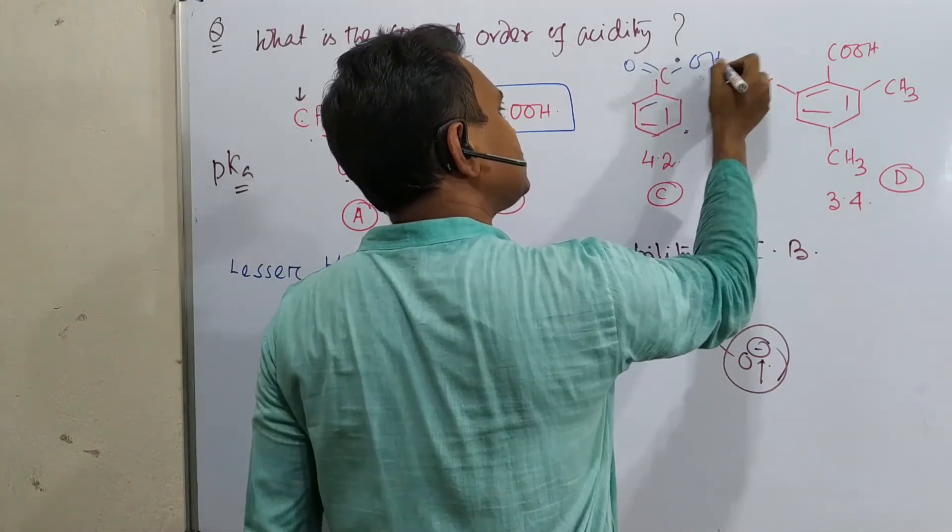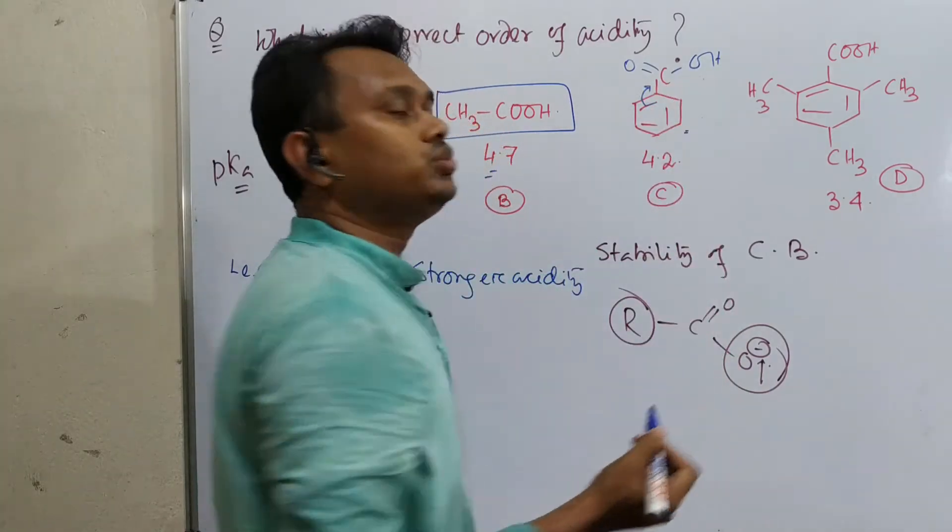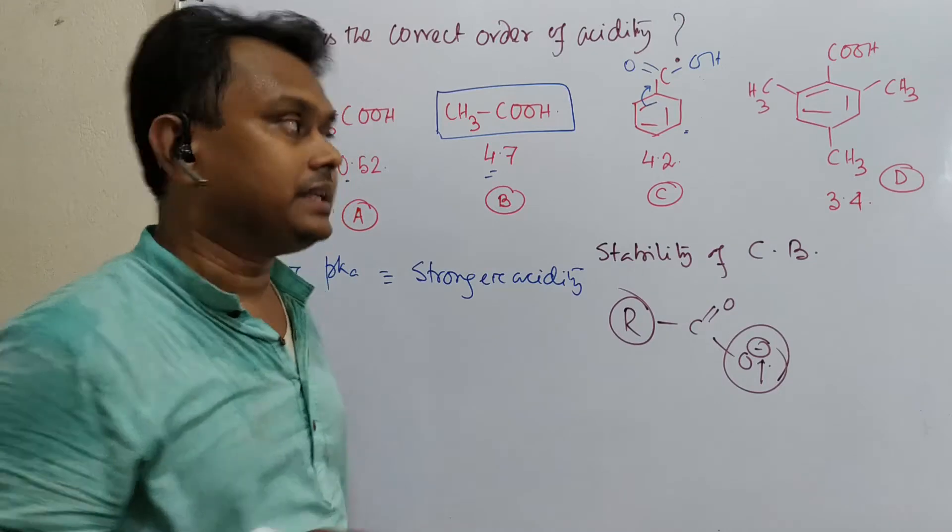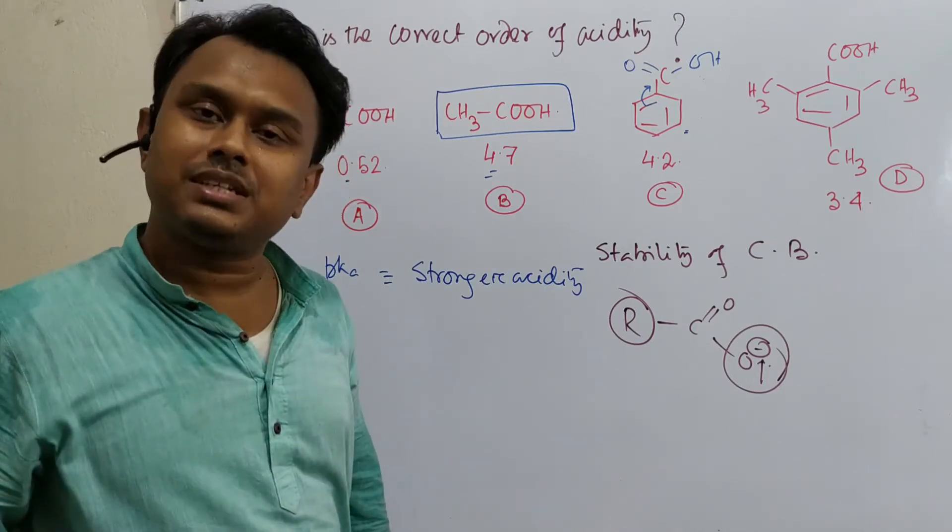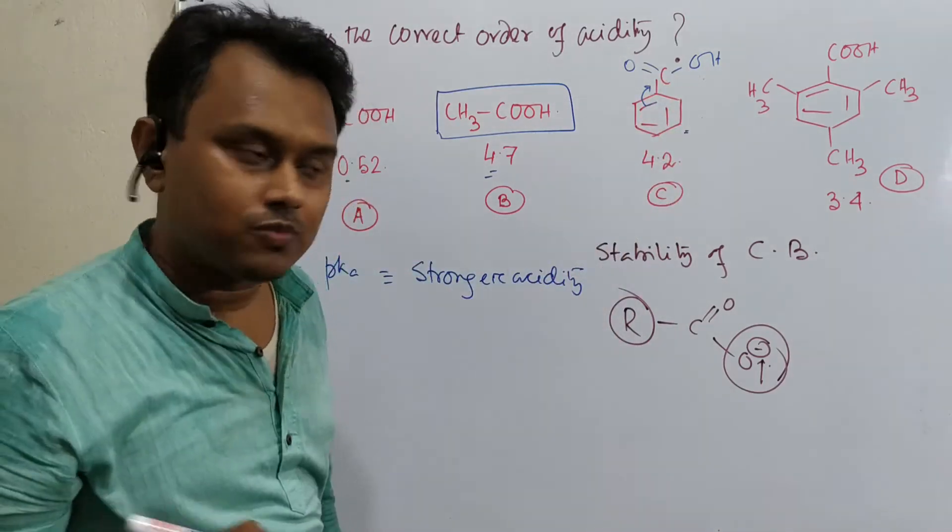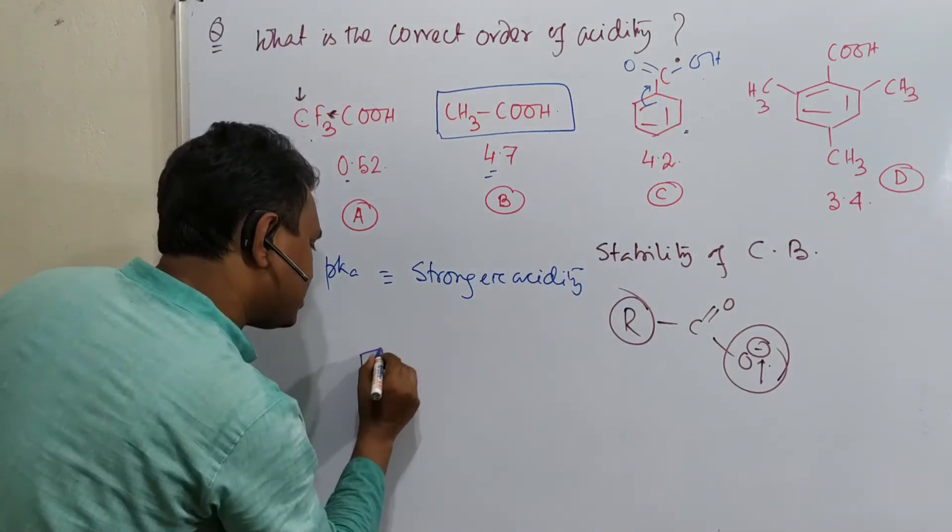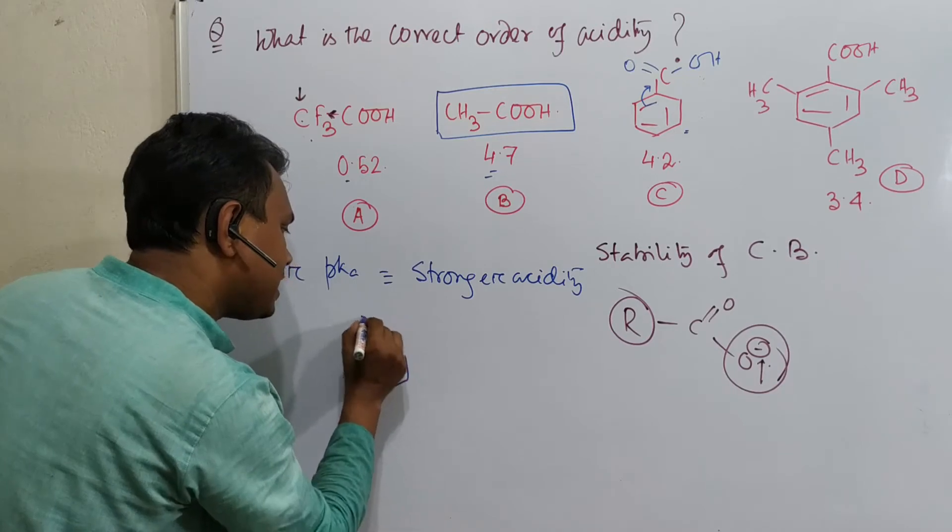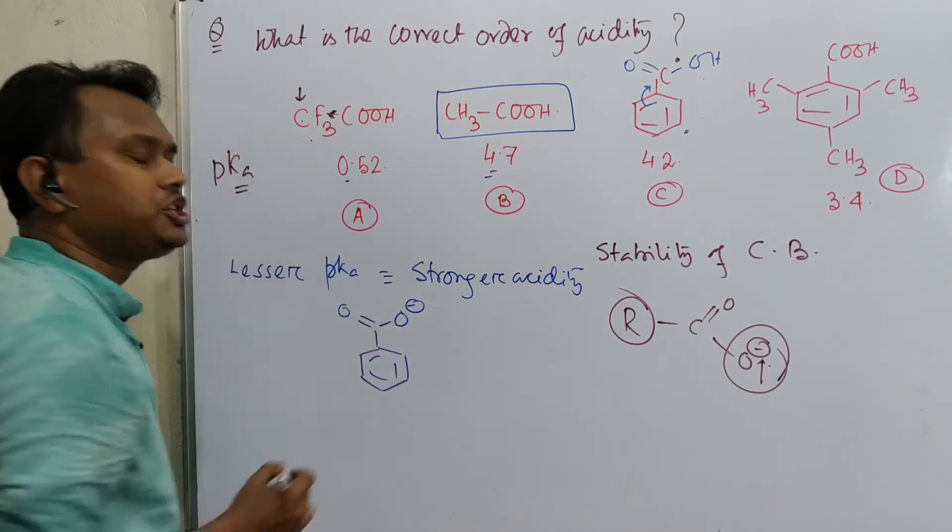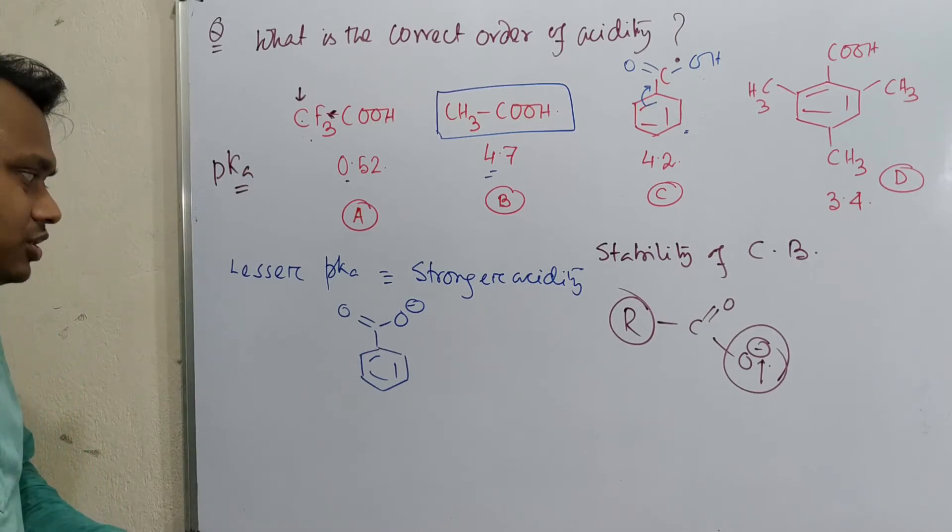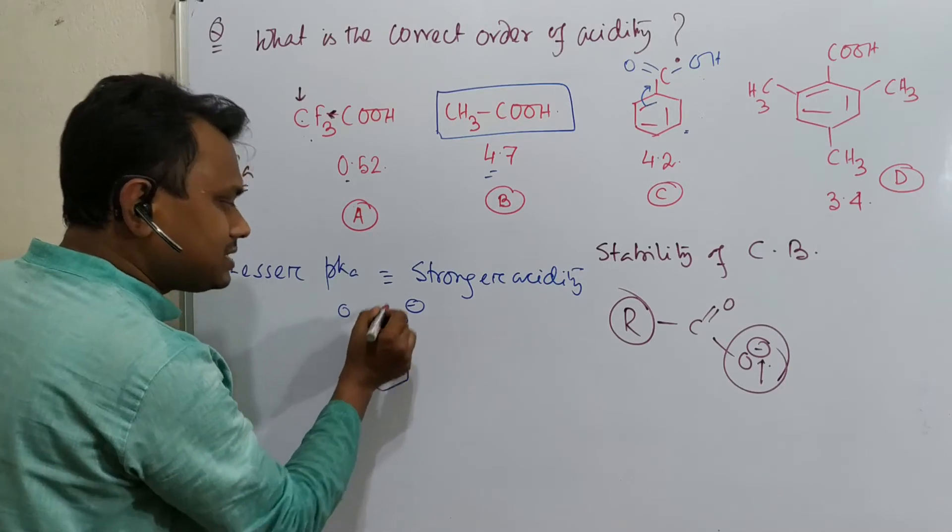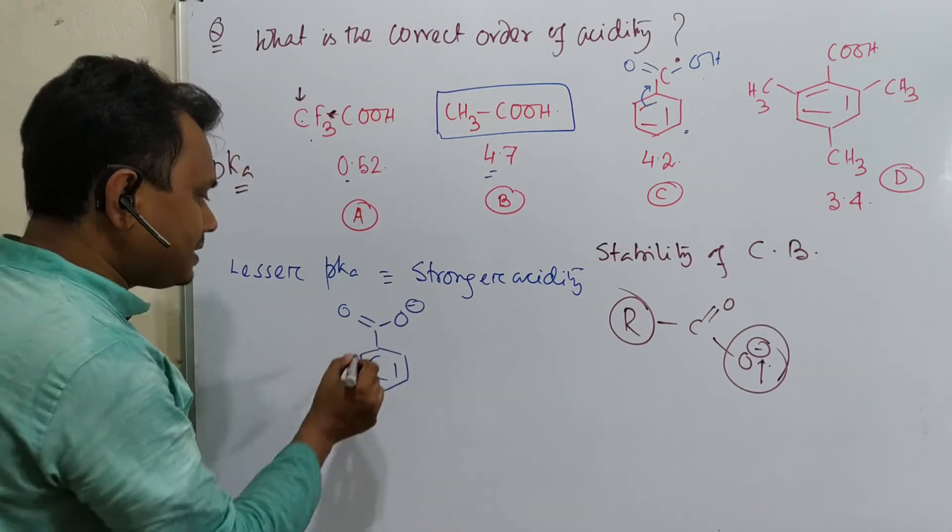This benzene ring is giving electron, so we expect that this acidity should be less. I agree. But remember, when there is a deficiency, it gives. But when this carboxylate anion forms, when this benzoate anion is formed, it is no more electron deficient that much. So consequently, what happened? This donation is not as significant in this case.